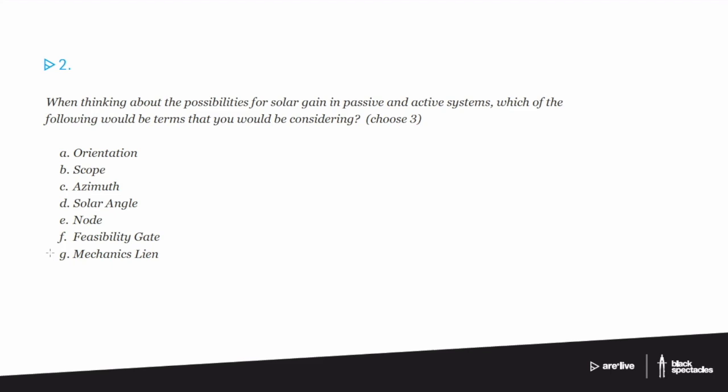So let's just run through what our possible answers are here. We're talking about solar gain and passive and active systems. We're thinking about the possibilities. Is this a possible thing? Where is the sun going to be? Will we have enough sun? And so our terms here are orientation, scope, azimuth, solar angle, node, feasibility gate, mechanics lien.